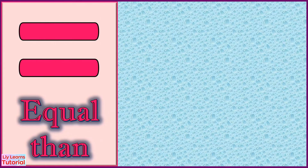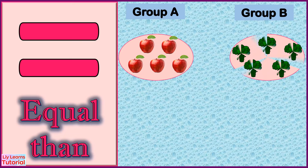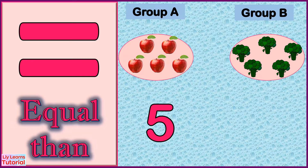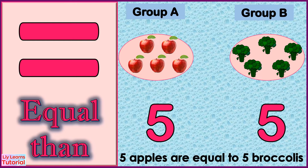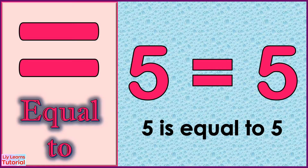For example, Group A and Group B. Group A has five apples, and Group B has five broccoli. Five apples are equal to five broccoli. Both numbers have the same value, so we use the equal to sign. We read this as: five is equal to five.